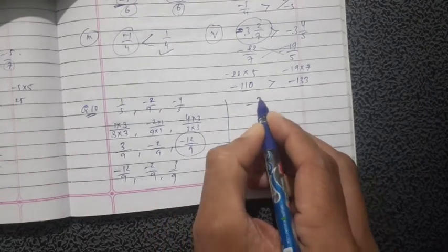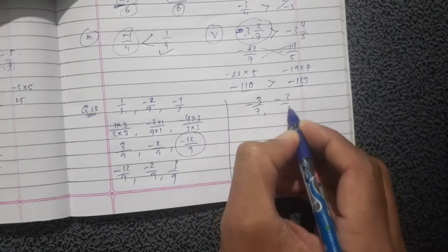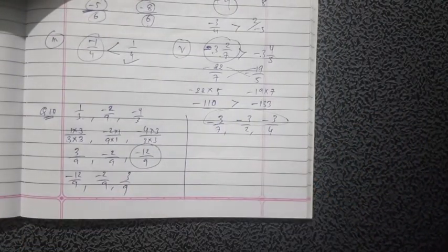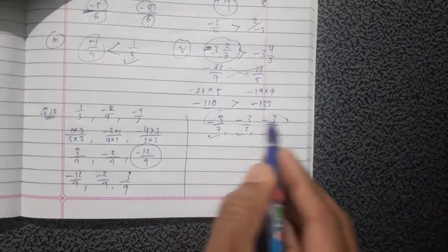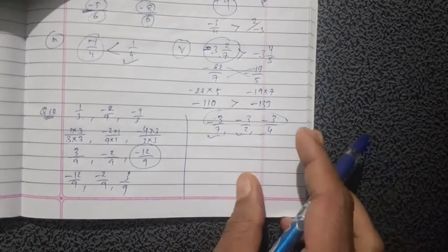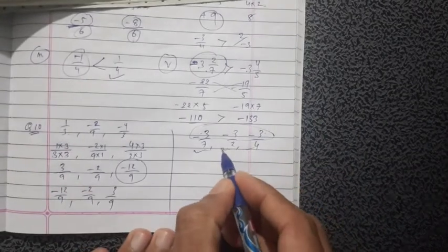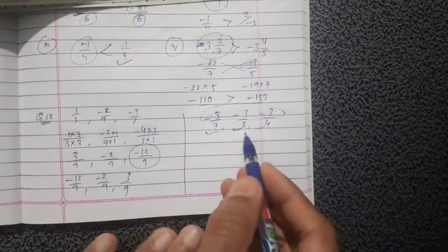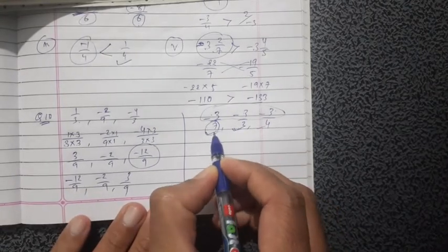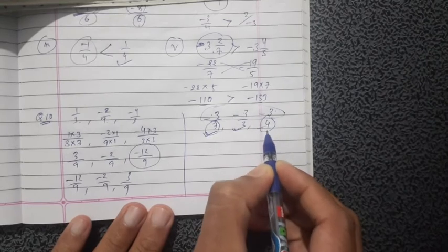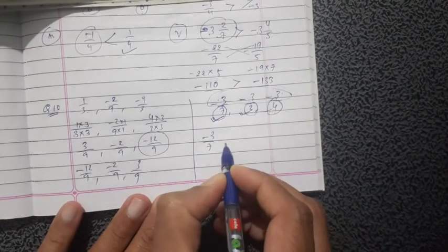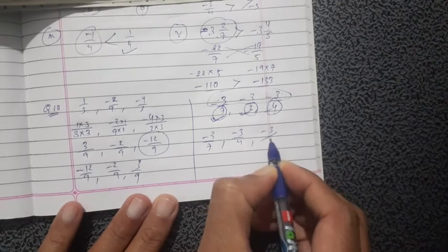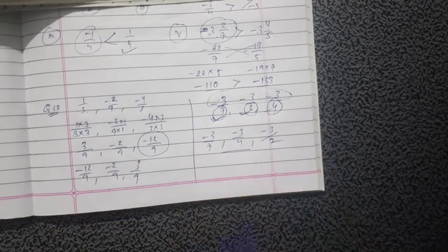Third one: minus 3 upon 7, minus 3 upon 2, and minus 3 upon 4. The numerators are the same, so compare the denominators. When numerators are equal and negative, the fraction with the larger denominator has the lower value — dividing by 7 gives the smallest value, dividing by 4 is next, and dividing by 2 gives the largest. So ascending order is: minus 3 upon 7, then minus 3 upon 4, then minus 3 upon 2.